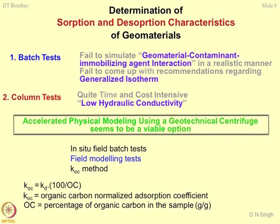Another method is the koc method, used when working with highly organic material. koc is the organic carbon normalized adsorption coefficient. If you have a soil with very high organic content, you find out the organic content and normalize. Because of organic content, the Kd will be more. You are normalizing with respect to 100 percent, so even if organic content is 100 percent, koc will equal Kd. koc will always be higher than the Kd parameter because of the organic contents present in the soil mass. This is a simple logic used to determine koc for organic soils, though this method is not utilized very widely.